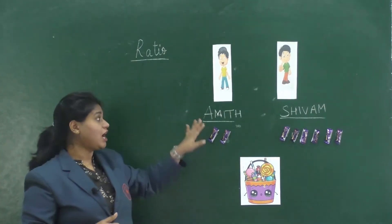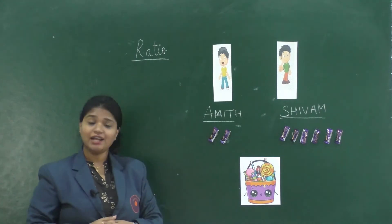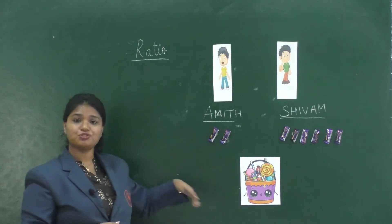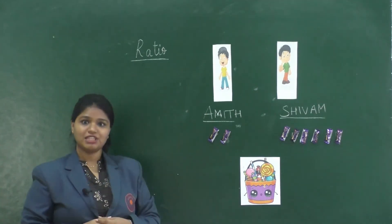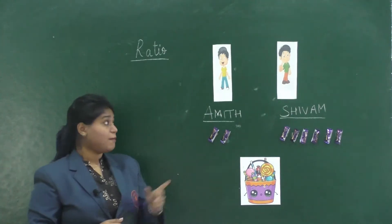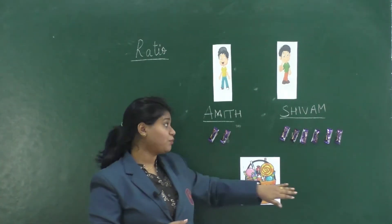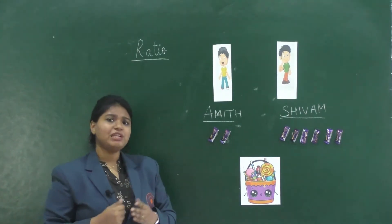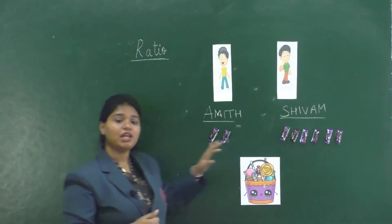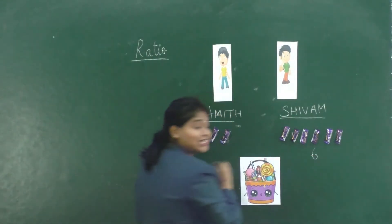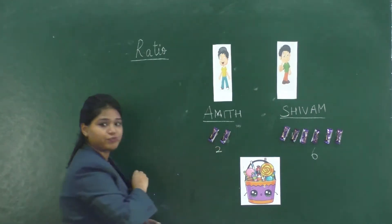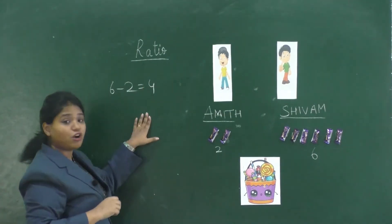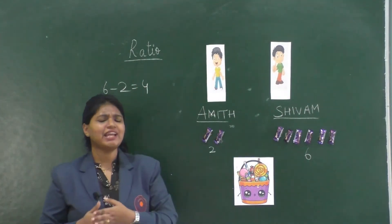We have two students named Amit and Shivam. They both had a magical bowl of candies. When Amit asked for candies, the bowl gave two candies, but when Shivam asked, the bowl gave six candies. Shivam got six candies and Amit got two, so six minus two equals four — Shivam got four more candies than Amit.